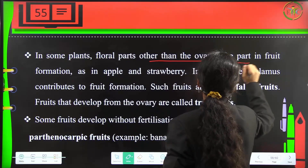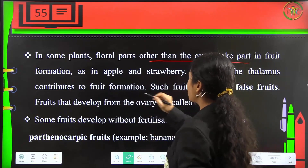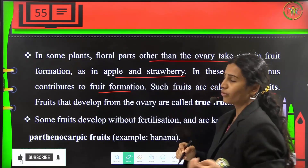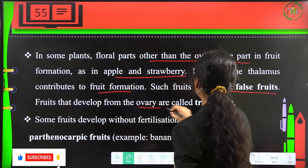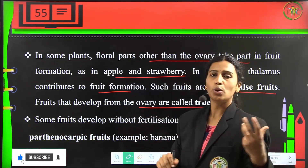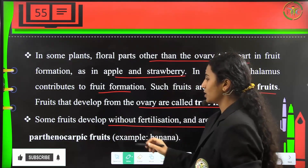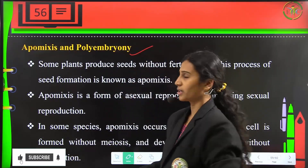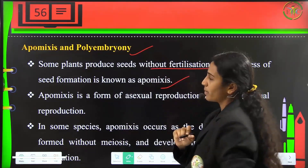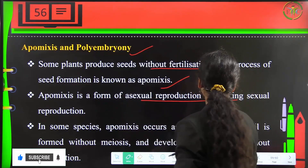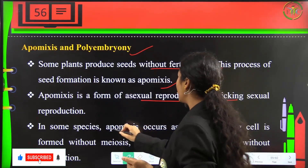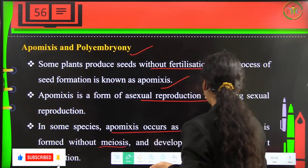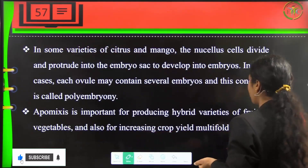In some plants, floral parts other than the ovary take part in fruit formation; these are false fruits like apple and strawberry, where the thalamus contributes. Fruits that develop from the ovary alone are true fruits. Some fruits develop without fertilization and are called parthenocarpic fruits, like banana. Some plants produce seeds without fertilization — this is called apomixis, a form of asexual reproduction that mimics sexual reproduction. In some species, a diploid egg cell is formed without meiosis and develops into an embryo without fertilization.